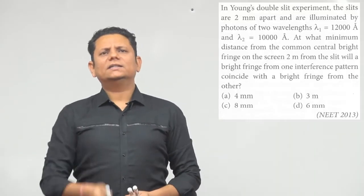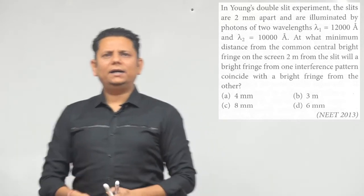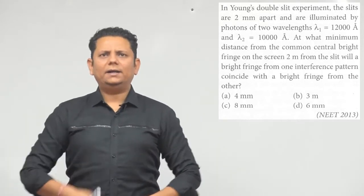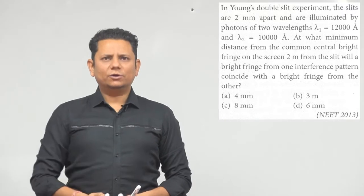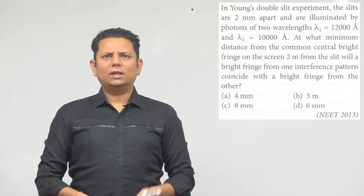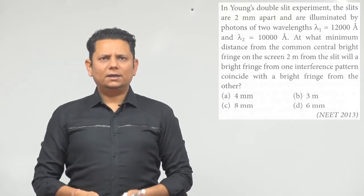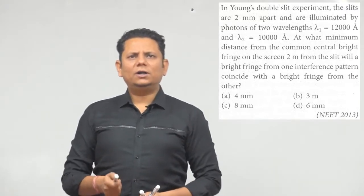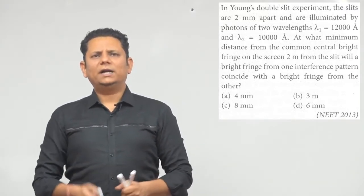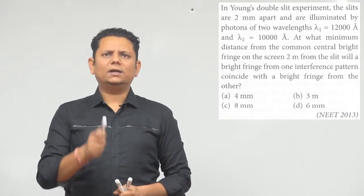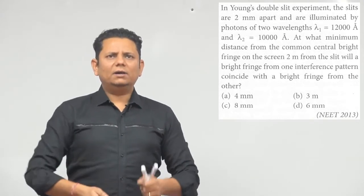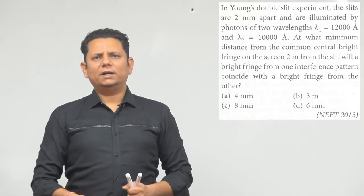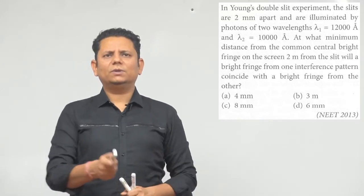Next question. In the YDSE experiment, the slits are 2 mm apart and are illuminated by photons of wavelength lambda 1 equal to 12,000 angstrom and lambda 2 equal to 10,000 angstrom. At what distance from the common central bright fringe on the screen 2 meters from the slit will a bright fringe from one interference pattern coincide with the bright fringe from the other?